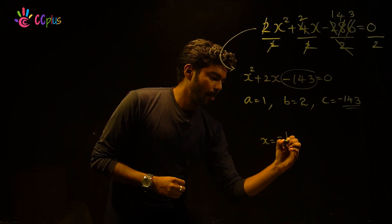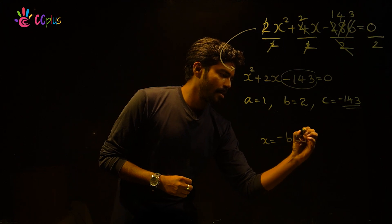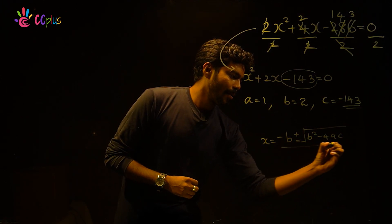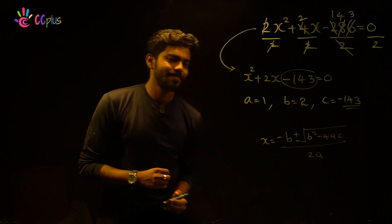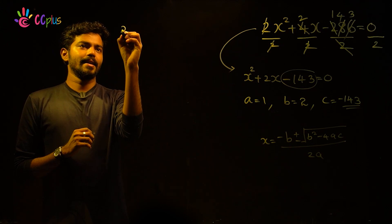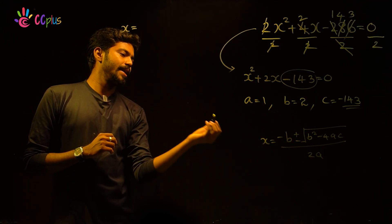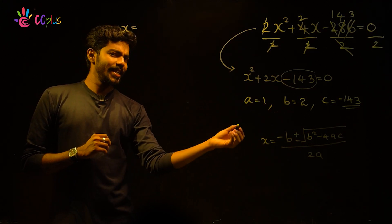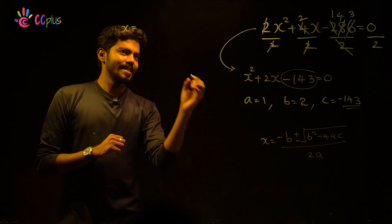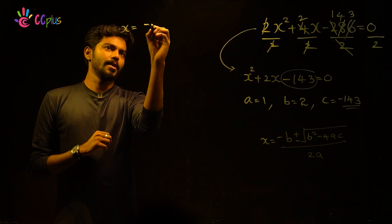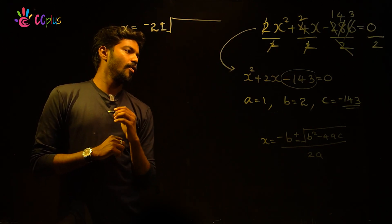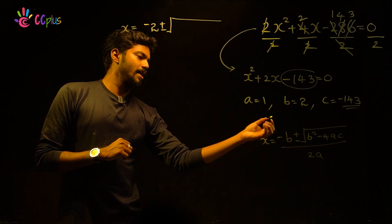The quadratic formula is x equals minus B plus or minus root of B squared minus 4AC all divided by 2A. Now we will substitute the values. Minus B position — B is 2.